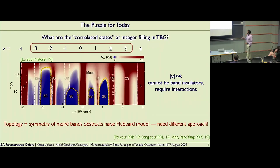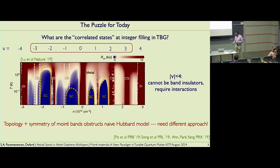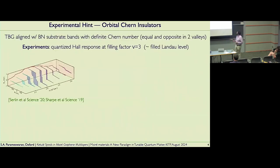The second statement to make is that we also know the standard approach of trying to write down some Hubbard-like description is challenged by the topology and symmetry of these bands. It's possible to do it, but it has lots of caveats — various people and many of those in this room have worked on it. So a different approach may be helpful, and that different approach ties very nicely with the rest of the physics in this conference.